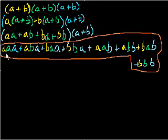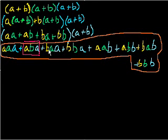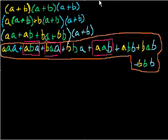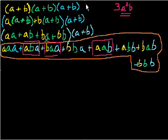Once we simplify, this first term is a cubed — the only a-cubed term. Then a²b: how many a²b terms are there? Let's see — this one is a²b, this one is b·a² which is also a²b, and this one is also a²b. So there are three ways to get a²b, which is why the coefficient is 3a²b when we multiply it out.